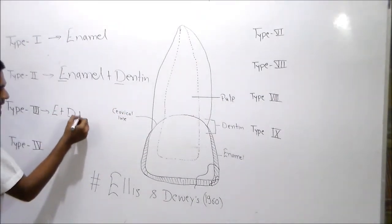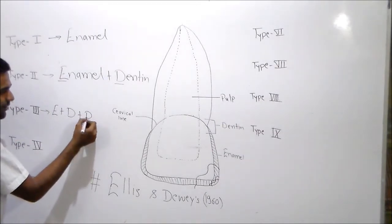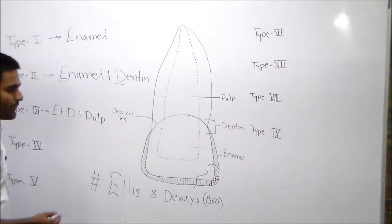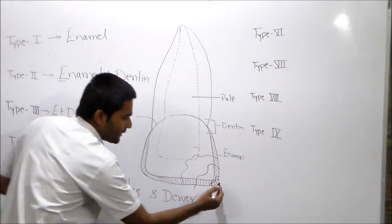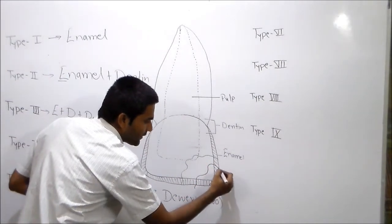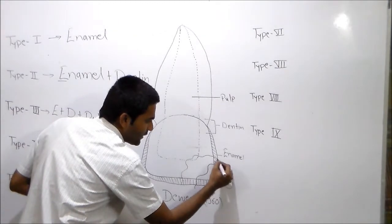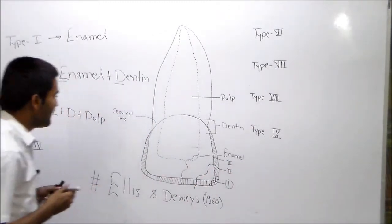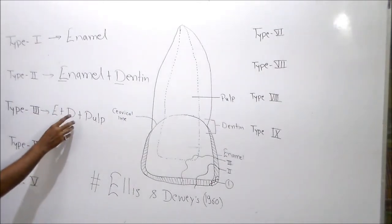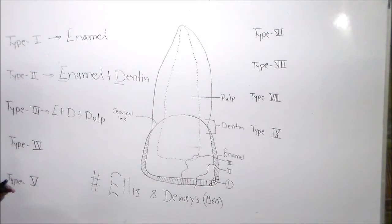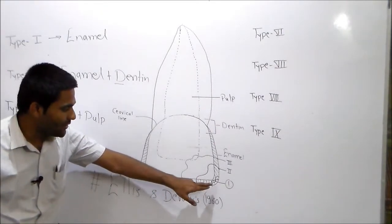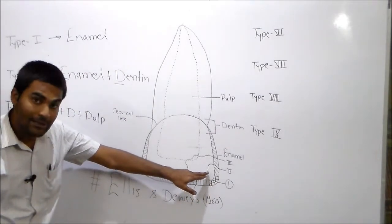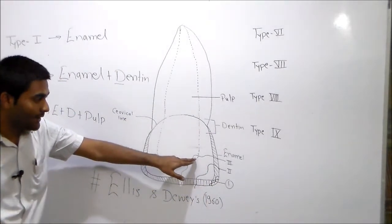Type 2 fracture in enamel. Type 3 fracture in enamel plus enamel and dentin plus exposure of pulp. Fracture in enamel, dentin, and pulp exposure known as Ellis Class 3 fracture. Now crown is broken, enamel is broken, dentin is broken, pulp is broken.